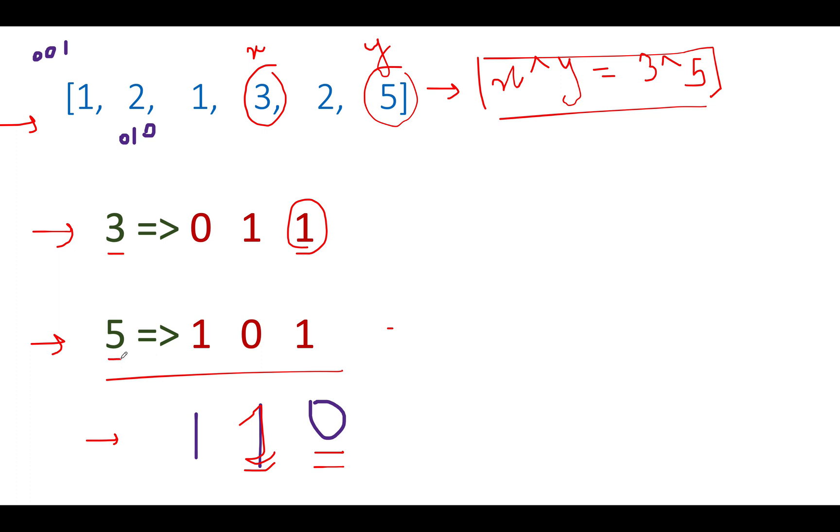One will be zero, other one will be one, or one will be one, other one will be zero. They can't be same because the resultant bit is set to one. Similarly, let's look at the further left most bit. Again, we can see that the result is one. That means both the bits in three and five differ at this particular position.